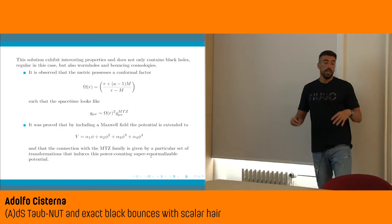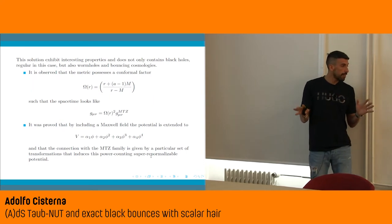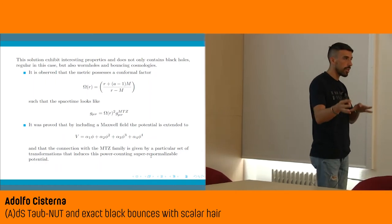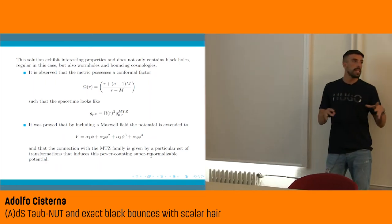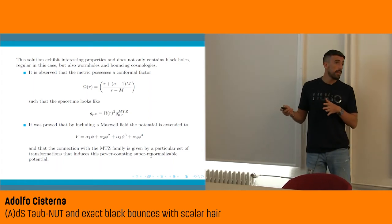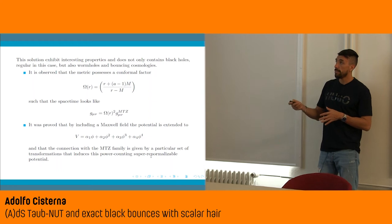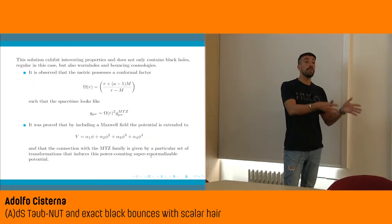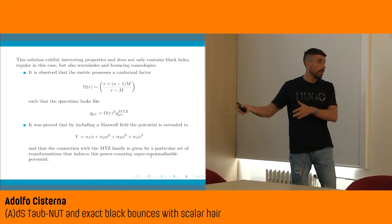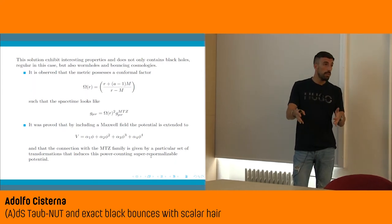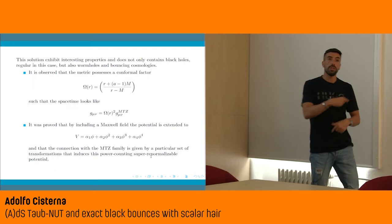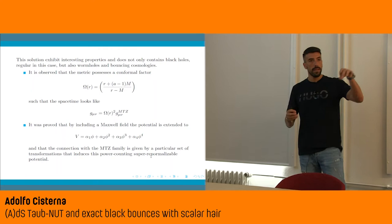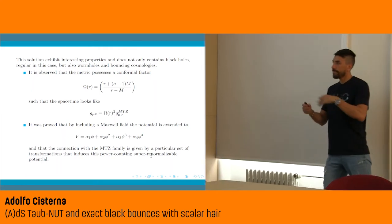This new spacetime obtained by applying the transformation is pretty interesting: the MTZ solution only described black holes, but the new spacetime not only represents black holes but also regular black holes, wormholes, and in some cases bouncing cosmologies — the kind of solutions that avoid the big bang by bouncing in the cosmological evolution.